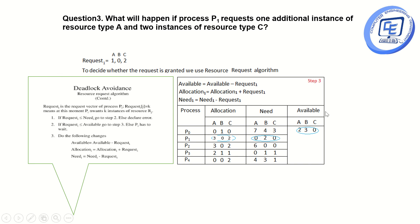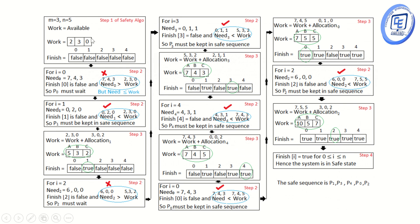Running the Safety Algorithm again on the updated values, carrying out the same four steps, we find the system is still in a safe state after giving the resources to process P1. The safe sequence remains P1, P3, P4, P0, P2. This is how we solve the Banker's Algorithm example. Thank you.